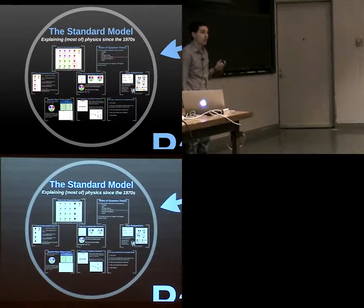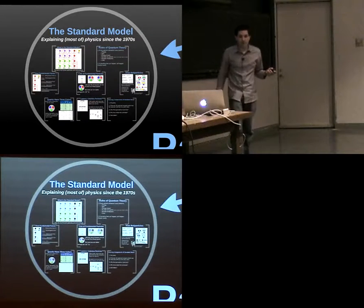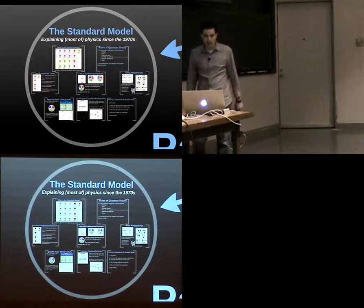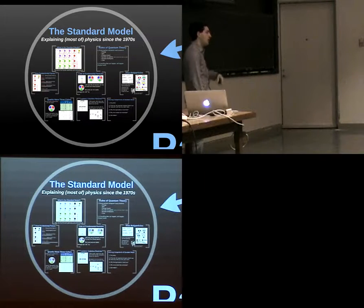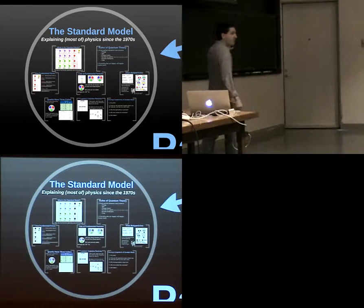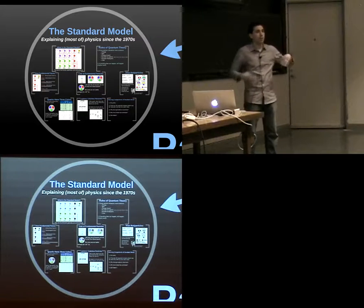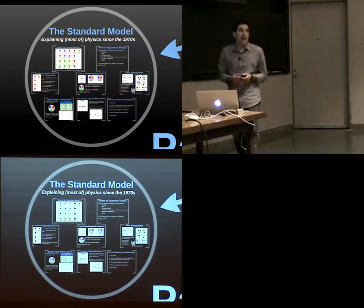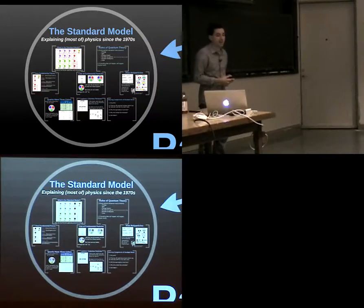So with an eye towards finding this sort of particle, let's look at the standard model of physics, which explains almost everything we know about physics and has since the 1970s. We'll look for where we might add something into the standard model in a reasonable, natural way and produce a particle that's a good candidate for dark matter.